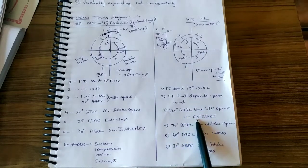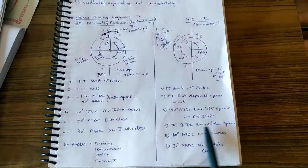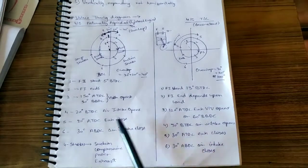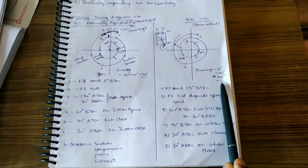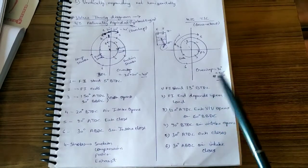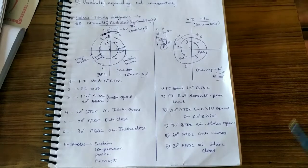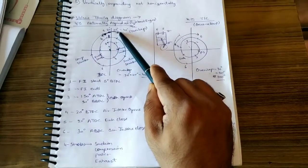Another change is the exhaust valve opens at 60 degrees before BDC. The major change is in the air intake: it opens at 70 degrees before TDC. The overlap period — when both the inlet and exhaust valves are open simultaneously — is an important concept. In the naturally aspirated engine it was 20 degrees plus 20 degrees, giving 40 degrees total overlap.